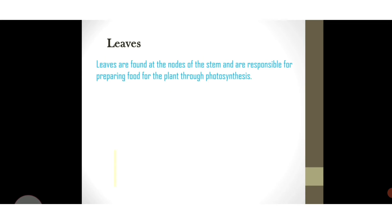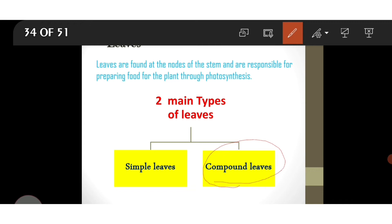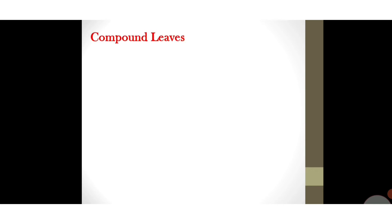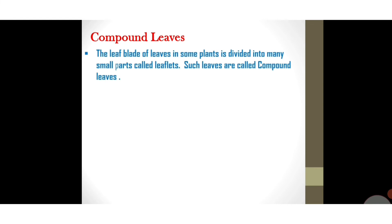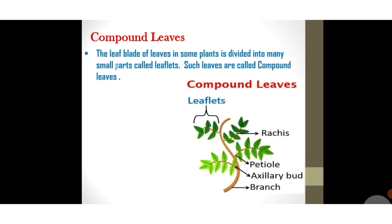Now let's learn the second main type of leaves — compound leaves. The definition: the leaf blade of leaves in some plants is divided into many small parts called leaflets — such leaves are called compound leaves. Now look at the picture of compound leaves.